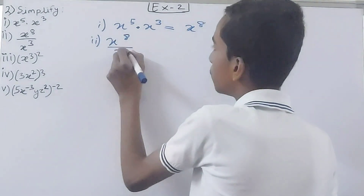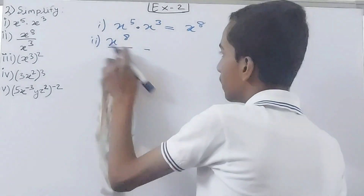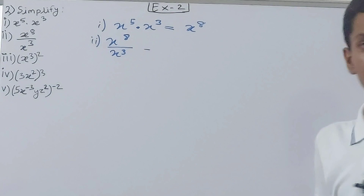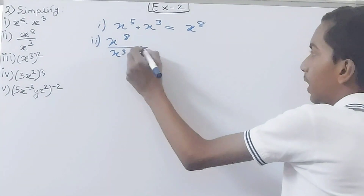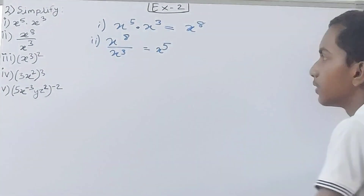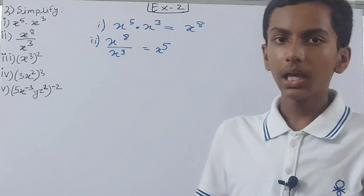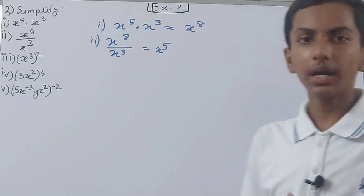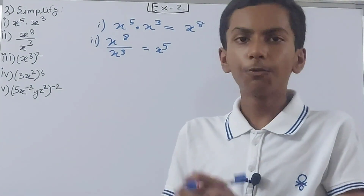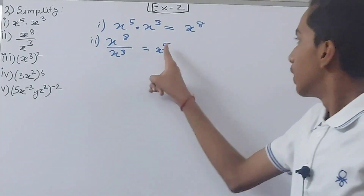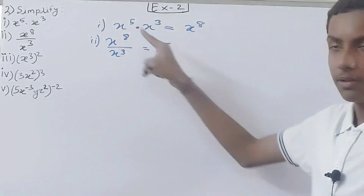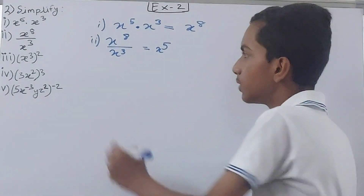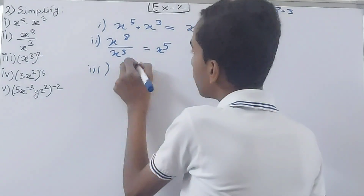Next, the second one: x to the power 8 upon x to the power 3. So what will this become? x to the power 5 — because we do 8 minus 3. In division we subtract the exponent of the denominator from the exponent of the numerator: 8 minus 3 equals 5.